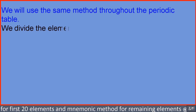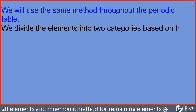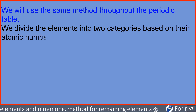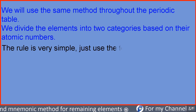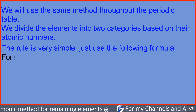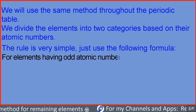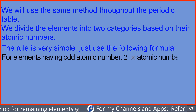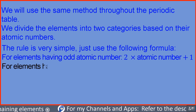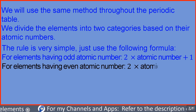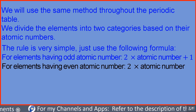We will use the same method throughout the periodic table. We divide the elements into two categories based on their atomic numbers. The rule is very simple — just use the following formula: for elements having an odd atomic number, 2 multiplied by the atomic number plus 1; for elements having an even atomic number, 2 multiplied by the atomic number.